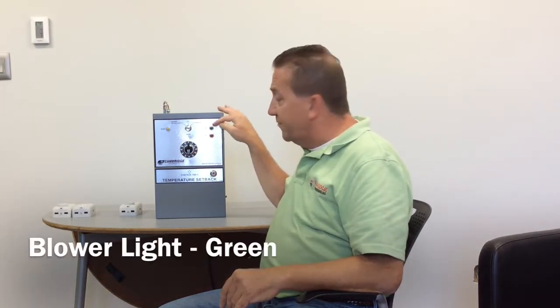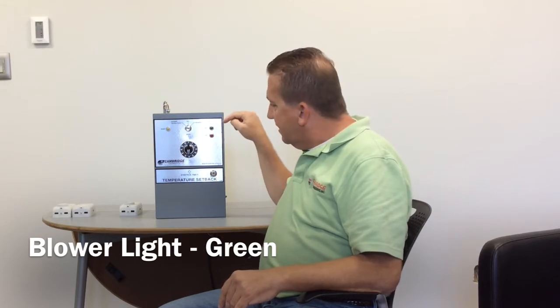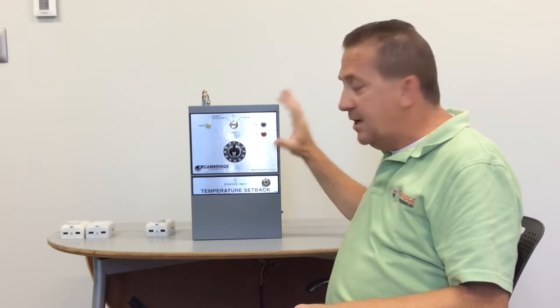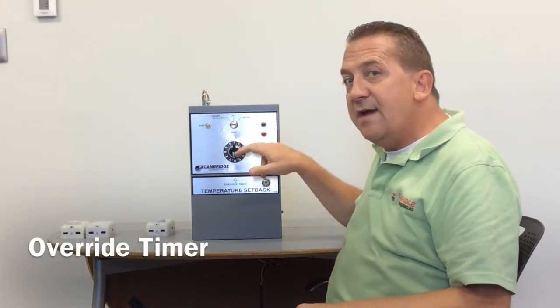The blower light is a green light and that light comes on whenever the blower is running. The red light comes on whenever the burner is firing. On this panel, on the TSS only, there's also an override timer, which is a two-minute egg timer, basically.